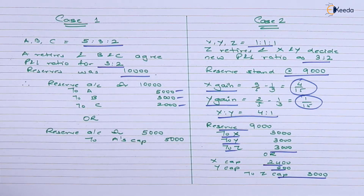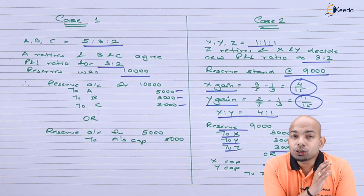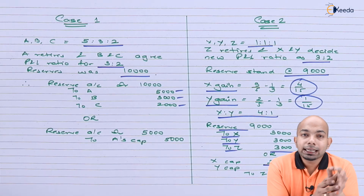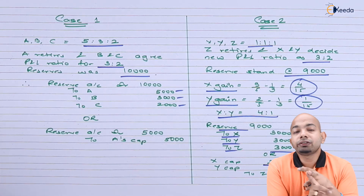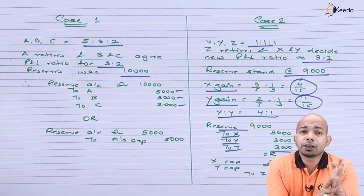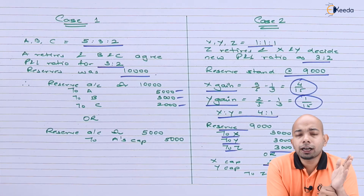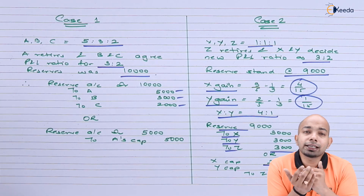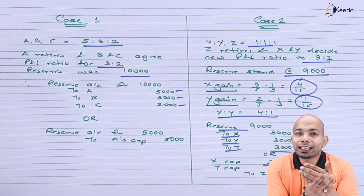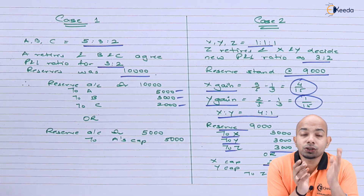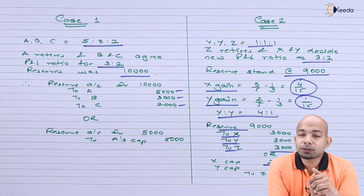These are the two case scenarios you need to understand when dealing with reserves on retirement of a partner. If retirement is done as per the existing ratio, no gaining ratio calculation is needed. But if there is a new ratio, you must calculate the gaining ratio. Reserves are distributed among all existing partners including the retiring partner. Thank you for watching — stay tuned with Ikida and keep subscribing.